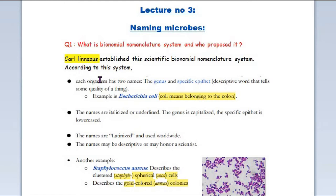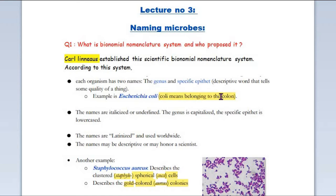Carl Linnaeus proposed this system, which is called the binomial nomenclature system. He told some rules about this system. The first rule was that every organism has two names — a genus name and a specific epithet.